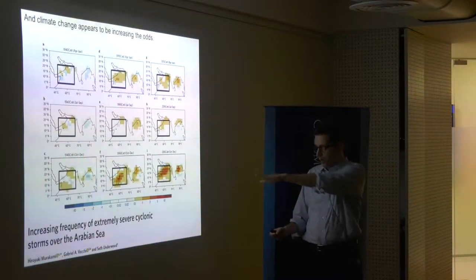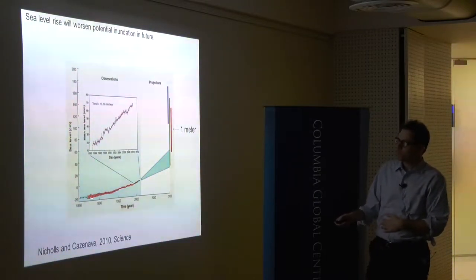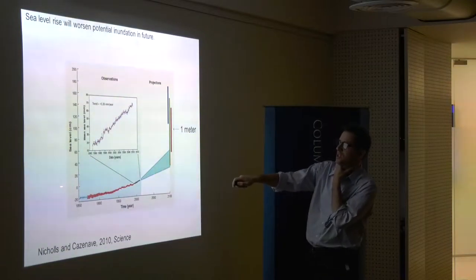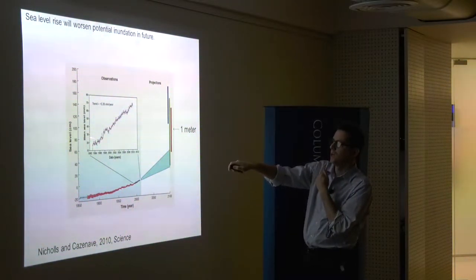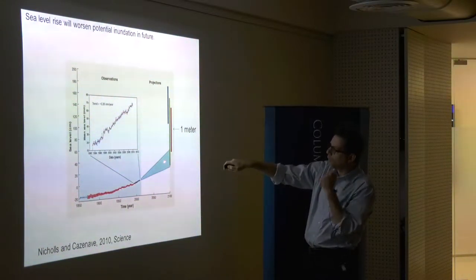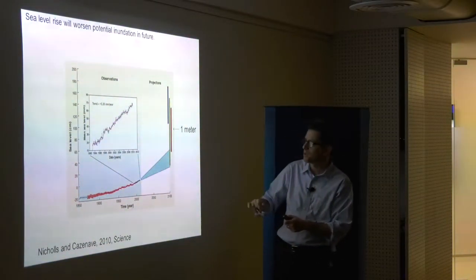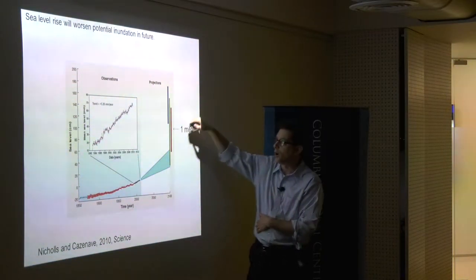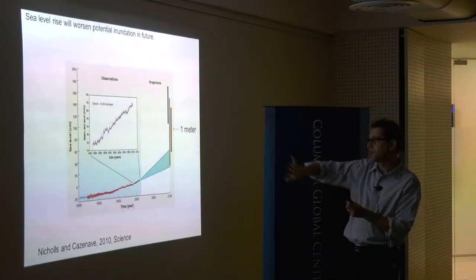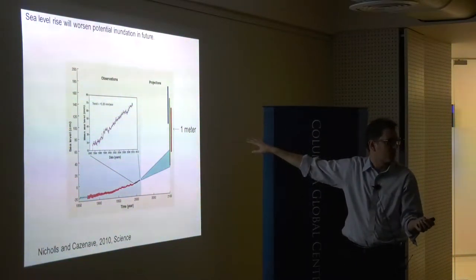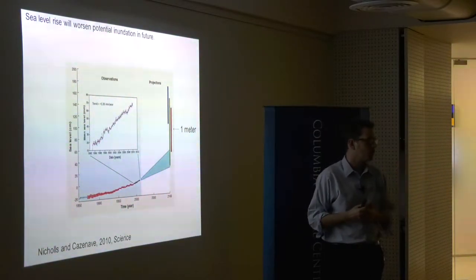Sea level rise is a big problem even if storms don't become more likely. This is global mean sea level over the historical period, rising about 3 millimeters per year. Old projections gave 10 to 50 centimeters by 2100; more recent IPCC reports give an upper bound of one meter; some estimates now suggest as high as two meters by 2100 — and it doesn't stop there. Sea level rise means that when a storm surge hits, the water starts from a higher baseline, giving worse flooding for the same storm.